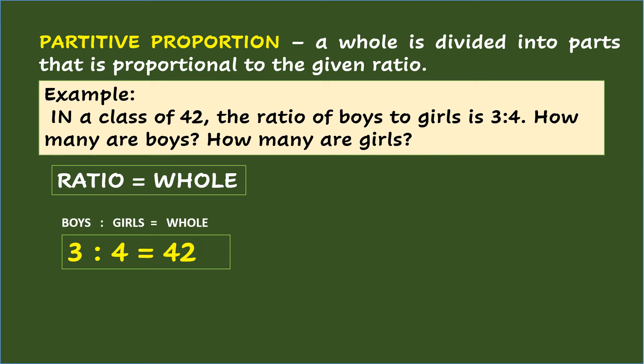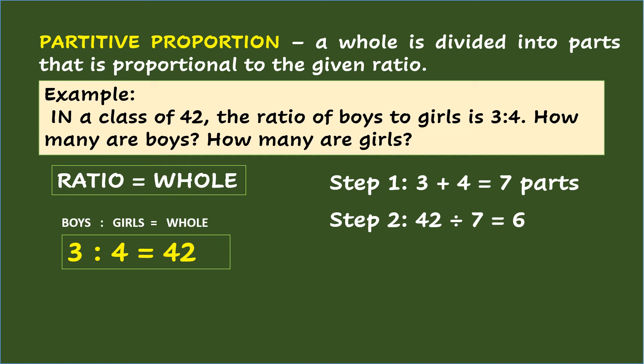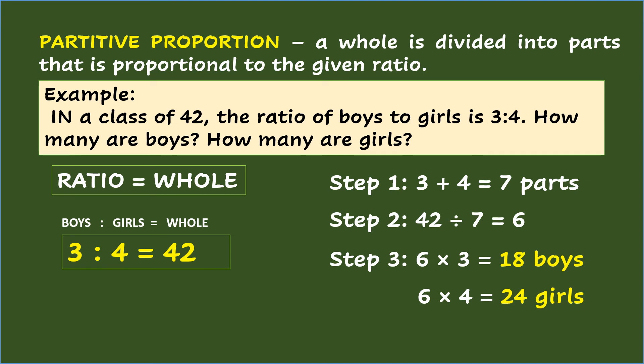To solve the partitive proportion: Step 1 — add the parts: 3 plus 4 equals 7 parts. Step 2 — divide the whole, which is 42, by the total parts, which is 7. So 42 divided by 7 equals 6. Step 3 — multiply 6 times 3 parts for boys equals 18, so there are 18 boys. And multiplying 6 times 4 parts for girls equals 24, so there are 24 girls.